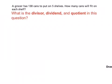We're going to do one word problem in our math notebooks together. So if you want to write with me here, don't write down the problem, just write down the work. Here's what it says. A grocer has 130 cans to put on five shelves. How many cans will fit on each shelf? So before we solve that, we're going to do some vocabulary review. What is the divisor, dividend, and quotient in this question?